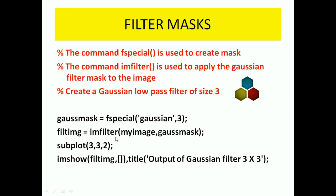Next is subplot(3,3,2) — so 3 rows, 3 columns, and the position of this filtered image is at 2. And the title of this image is given as 'output of Gaussian filter 3x3'. The imshow command is used to show that output filtered image for all range of values.